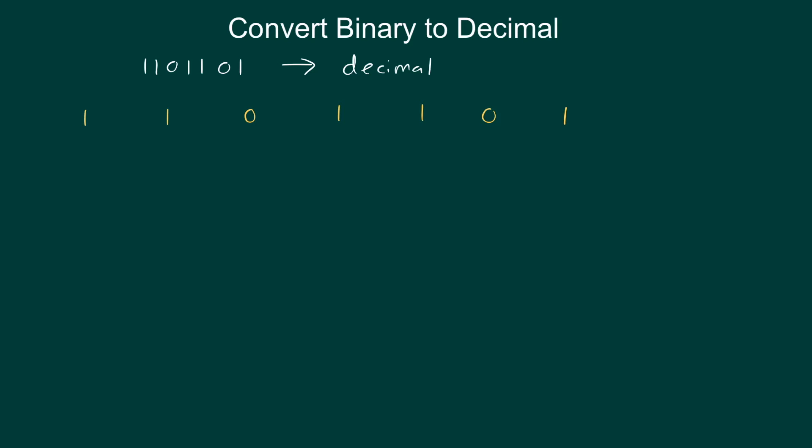And I'm going to start converting it to decimal. So I'm going to look at this number right here, this one. And I'm going to pull it down. I'm going to multiply this number in parentheses by its place. So 1 times 2 to the 0.